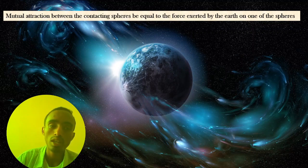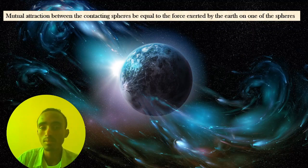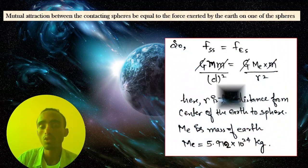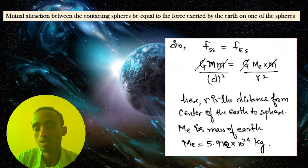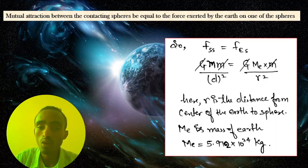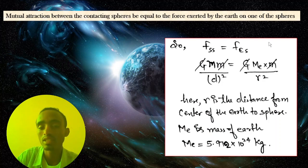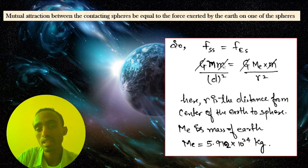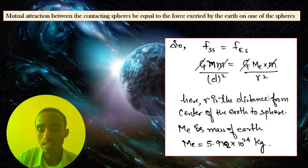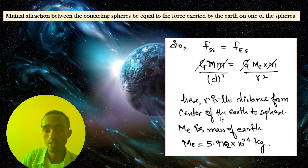The mutual attraction between the two spheres is equal to the force exerted by the Earth on one of the spheres. This means: G times M_sphere times M_sphere over d squared equals G times M_earth times M_sphere over r squared. The two sphere masses are equal, so one mass cancels on each side, and G cancels out as well.